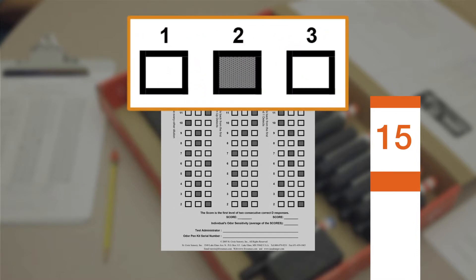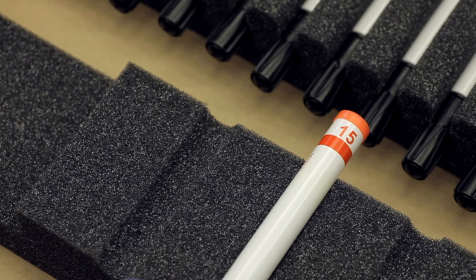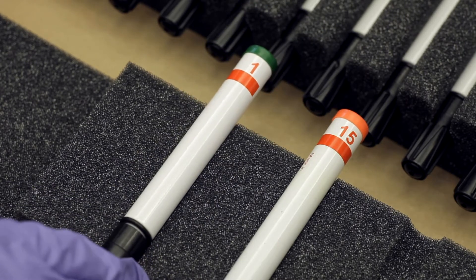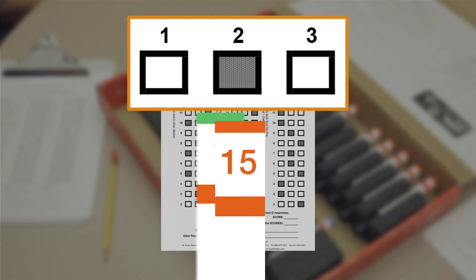One of these is different from the other. We will start the warm-up with the butanol pen number 15, placing that pen in the center position, and one blank pen in the left position. We will use the blank pen twice, in the left position and the right position. The test administrator then begins to present the pens in sequence, left, center, and then right.